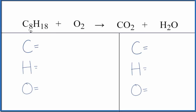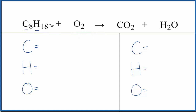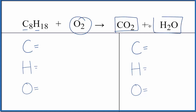Let's balance the chemical equation for C8H18 plus O2. This is octane and we have oxygen gas. The type of reaction here is a combustion reaction. That's because we have carbons and hydrogens bonded together, and we're adding them to oxygen and getting carbon dioxide and water. That's the type of reaction.